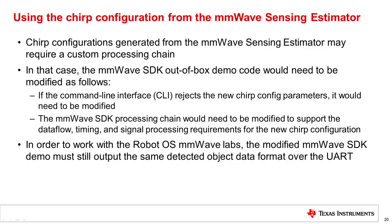Chirp configurations generated from the mmWave Sensing Estimator may require a custom processing chain on the device, and thus may not be able to be used directly by the Robot OS mmWave lab since they rely on the mmWave SDK out-of-box demo. In that case, the mmWave SDK out-of-box demo code would need to be modified. For instance, if the command line interface, or CLI, rejects the new chirp config parameters, it would need to be modified to accept them, or the new chirp config parameters could be provided directly to the mmWave SDK device configuration API calls in the code. The mmWave SDK processing chain would also need to be modified to support the data flow, timing, and signal processing requirements for the new chirp configuration.